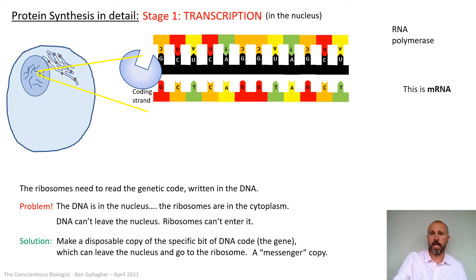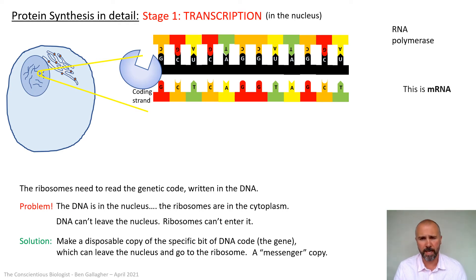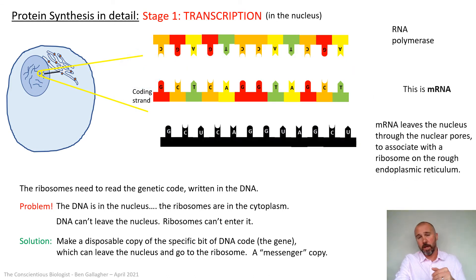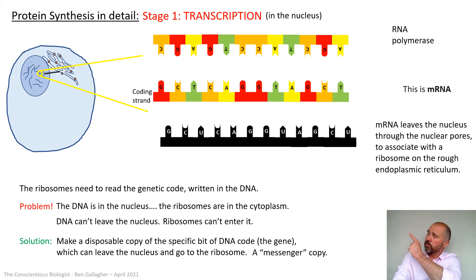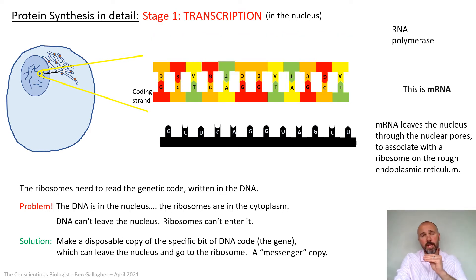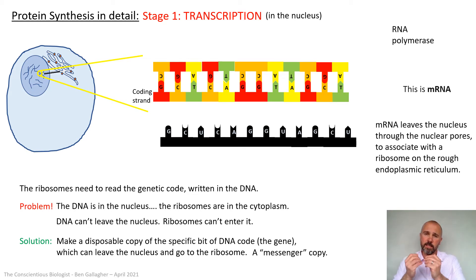Filling in the rest of the base pairings: C with G, A with T, and uracils wherever there would have been a thymine, matching up to the thymines on the coding strand. This mRNA strand can now come out of the double strand and leave the nucleus through the nuclear pores to associate with a ribosome on the rough endoplasmic reticulum. The DNA strands themselves close back together as if nothing happened, safe and secure in the nucleus. This is transcription — how you get a temporary mRNA copy built from a DNA strand.